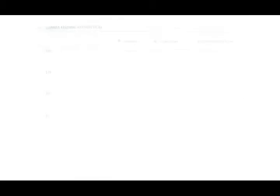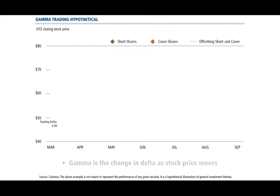Let's look at a hypothetical stock chart over time to see how this plays out. We begin with a typical convertible arbitrage: we own a convertible bond and we're short shares of the underlying stock. Our bond is at 50 delta here, so we need to short 50% of the shares we can convert into to be on a neutral hedge.